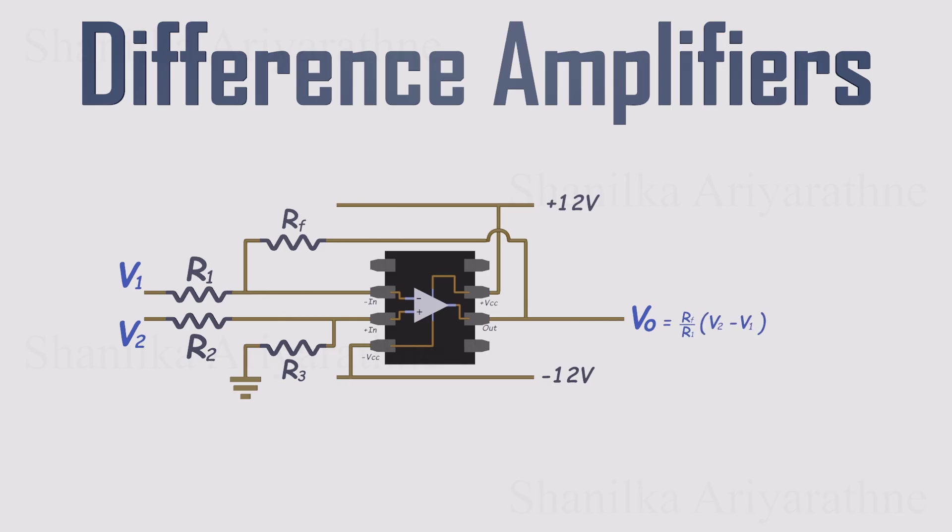The output voltage comes out as a weighted difference between the two inputs. And don't worry about the word weighted. If we choose the resistor values carefully, the output becomes simply the difference between the input voltages.